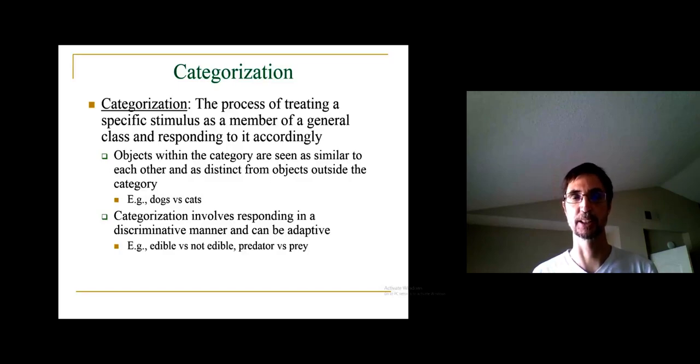For example, we have categories of dogs and cats. We think dogs have certain features in common that distinguish them from, say, cats. For example, you might think, and I might agree, that dogs are useful animals, not useless, and that dogs are fun to have. Categorization involves responding in a discriminative manner, and it can be adaptive. An animal or human responds in a particular way to a stimulus, in a way that it might not respond to another stimulus, in virtue of the category to which it belongs.